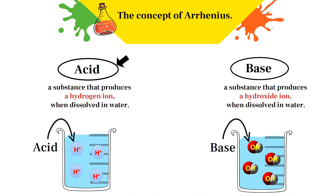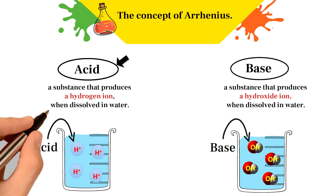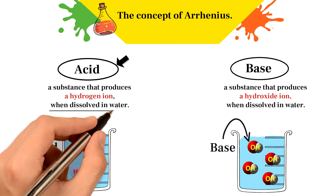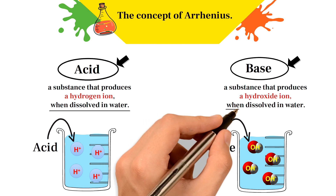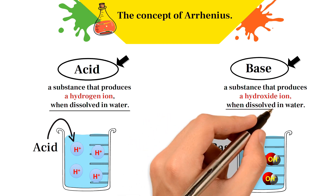According to the definition of Arrhenius, an acid is a substance that produces a hydrogen ion when dissolved in water, while a base is a substance that produces a hydroxide ion when dissolved in water.